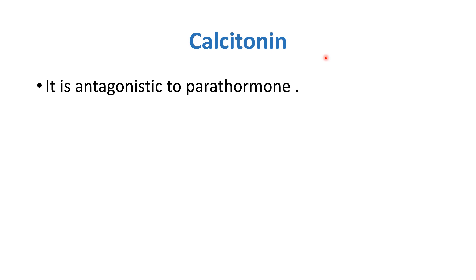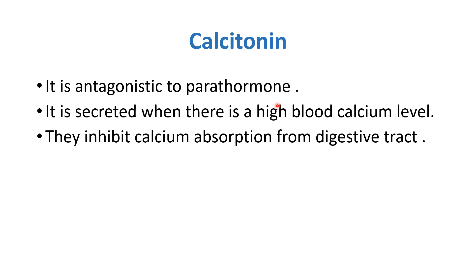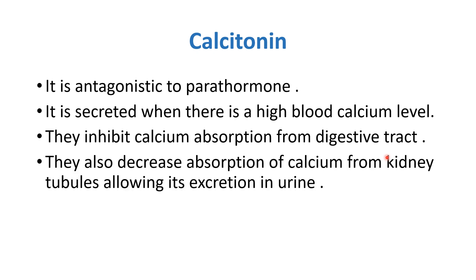Now we will discuss calcitonin, the last hormone of the thyroid gland. Calcitonin works antagonistically to parathyroid hormone. It is secreted when there is a high blood calcium level. Its actions include inhibiting calcium absorption from the digestive tract and inhibiting calcium reabsorption from kidney tubules, allowing its excretion in urine.